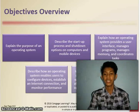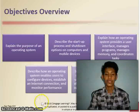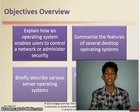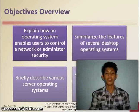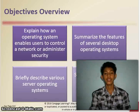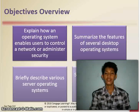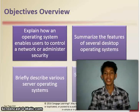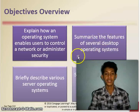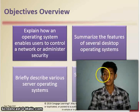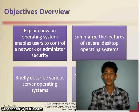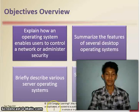Along with ways to update operating system software, explain how an operating system enables users to control a network or administer security, summarize the features of several desktop operating systems, briefly describe various server operating systems, and summarize the features and use of several mobile operating systems.